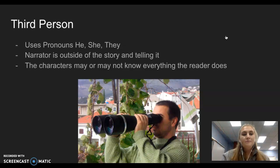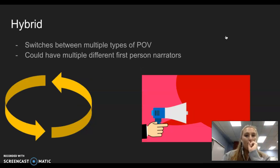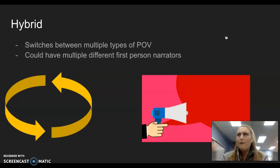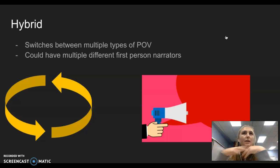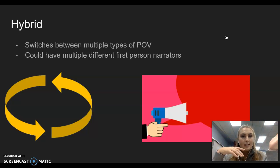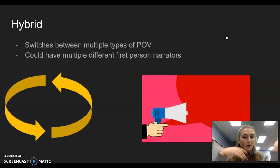It drives you crazy as a reader — you know the sandwich is poison and he doesn't, and it's crazy. So those are the three main types, but there's also a fourth that we don't really talk about, which is hybrid. You can switch between points of view. They usually switch from first person to third person, but they can also include second person, just switching back and forth. It's very cool.